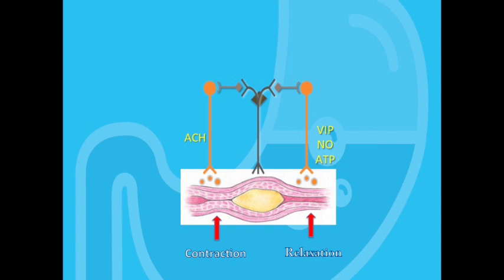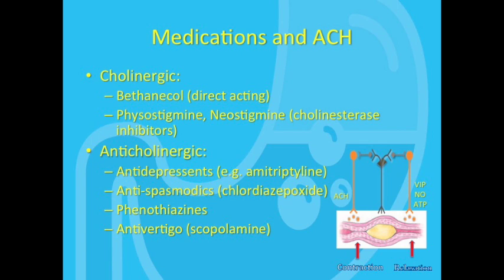This reflex is considered local because it can occur in the gut autonomously. We have a number of medications with either cholinergic or anticholinergic activity. Cholinergic drugs such as bethanechol, physostigmine, and neostigmine enhance the contraction arm of the peristaltic reflex, so their common side effects are cramps and diarrhea. Conversely, drugs with anticholinergic activity, such as antidepressants, commonly cause constipation as an adverse effect.